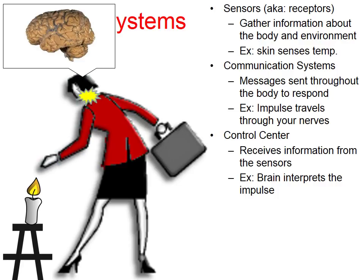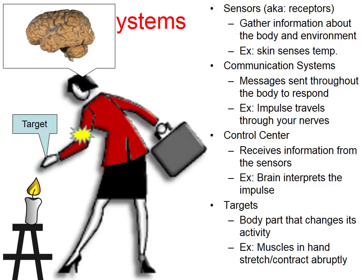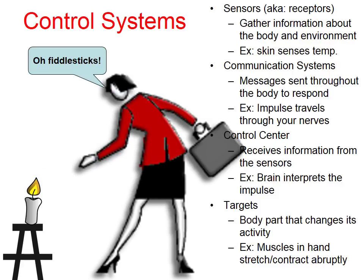Finally, the brain has to tell the body to change its action, so the brain is going to send a signal to what's called the target. In this case, the target is the woman's hand. She's touching something hot, so the brain is sending a signal back to her hand that will cause her muscles to stretch and contract very abruptly. All these control systems are designed to maintain a constant internal environment.